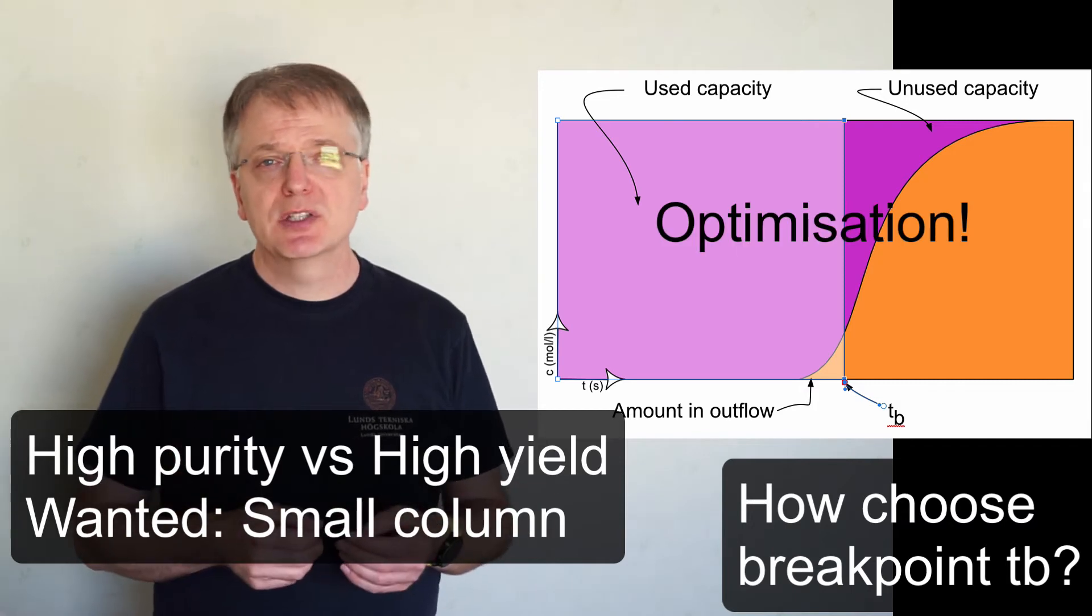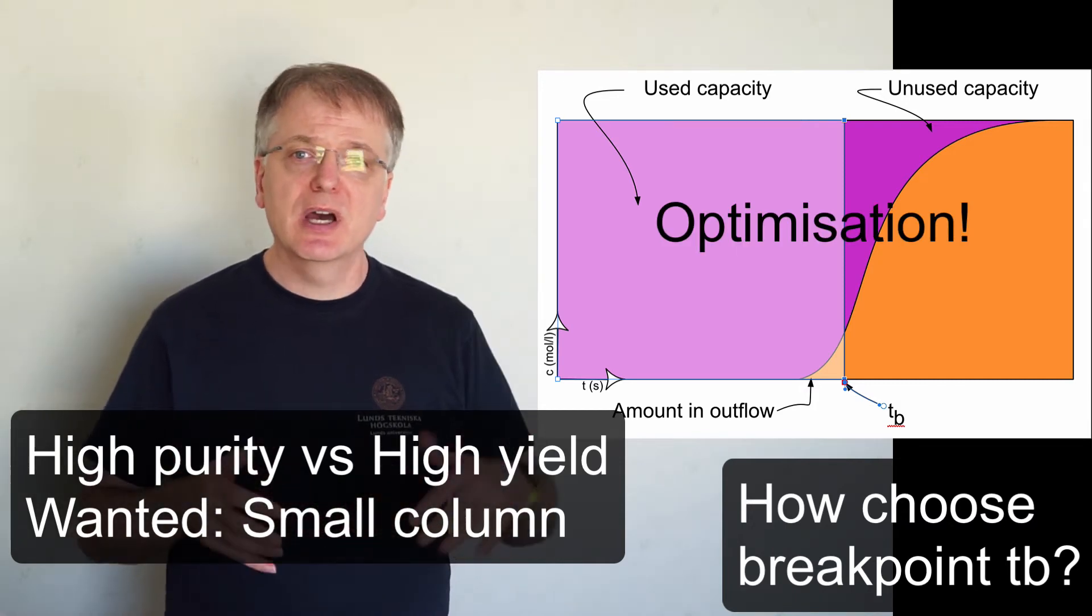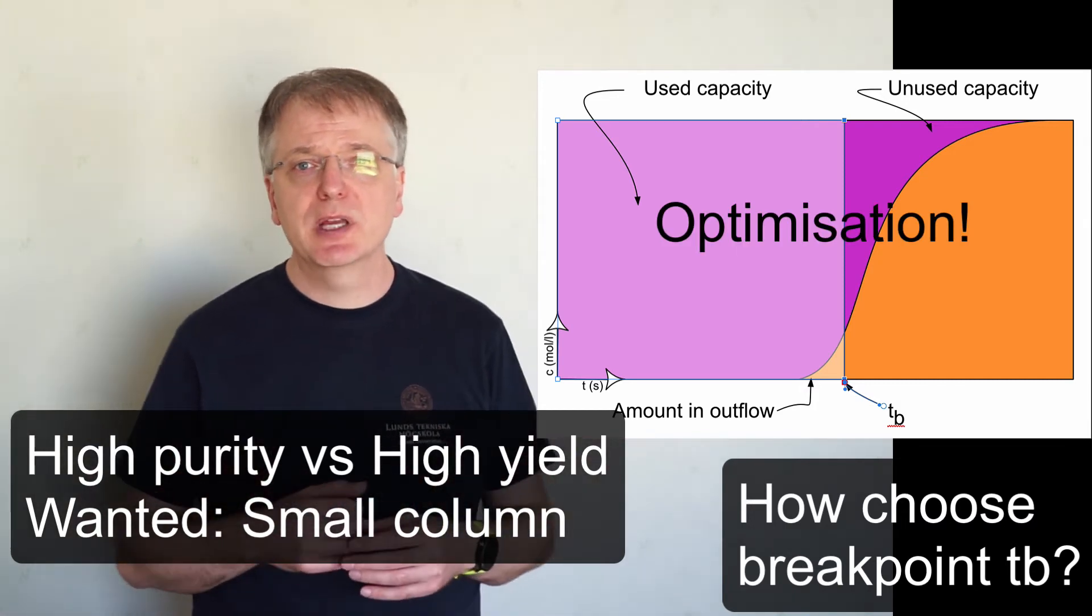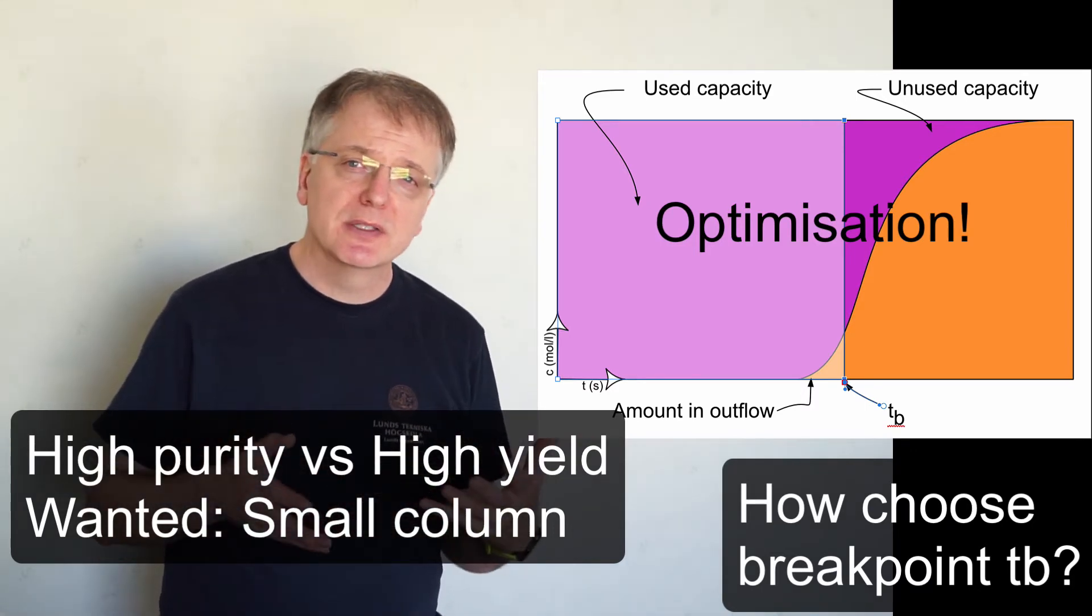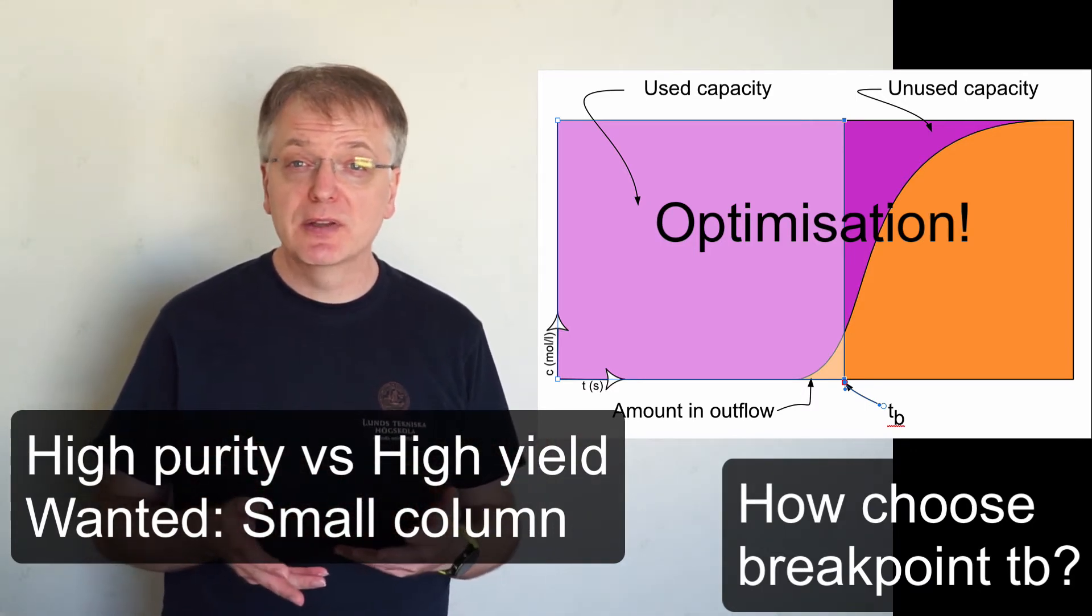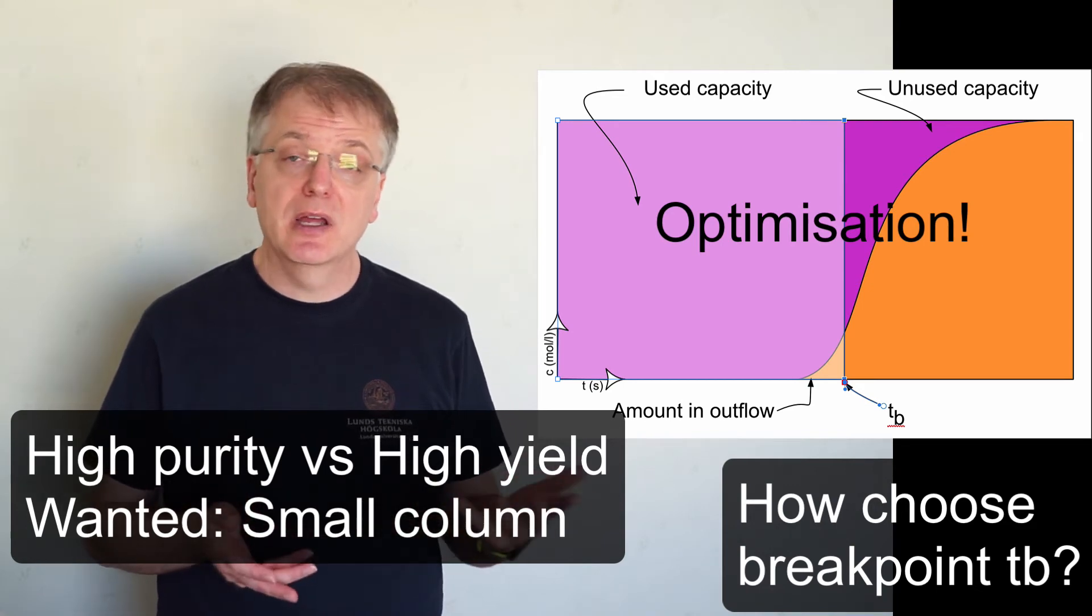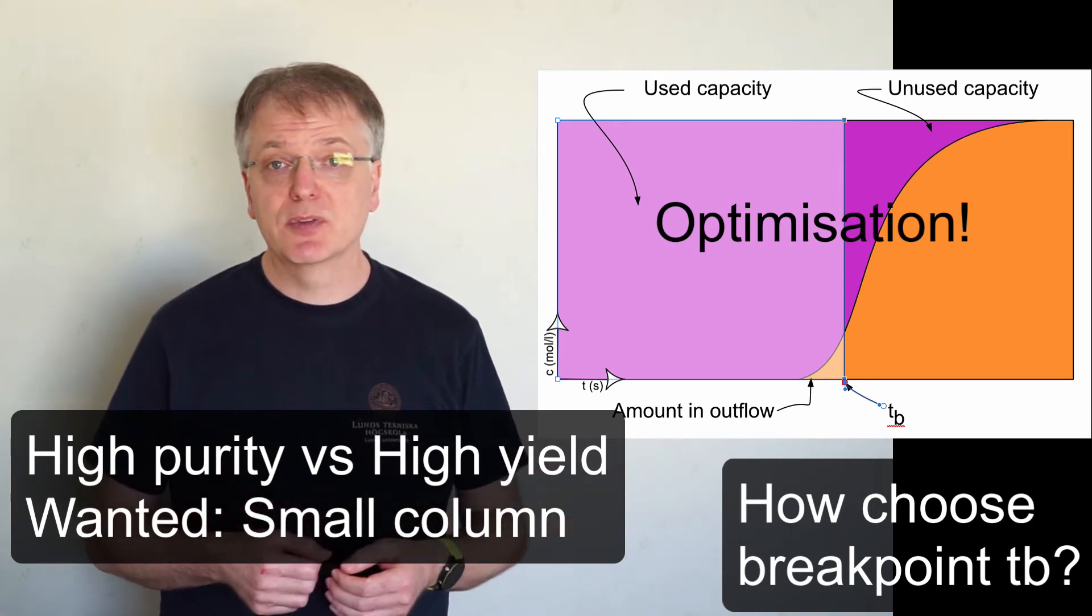This becomes an optimization problem where we need the entire breakthrough curve to choose our breakpoint. What we optimize could, for example, include the economic viability of the production and/or the environmental impact of the process.